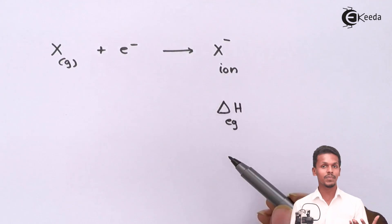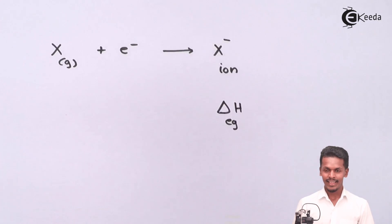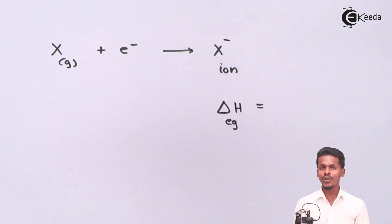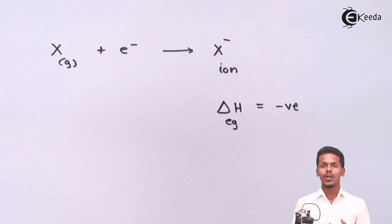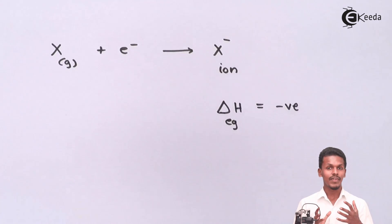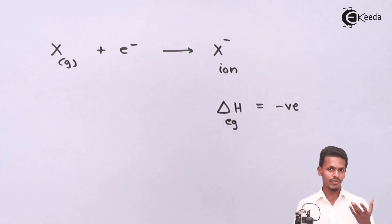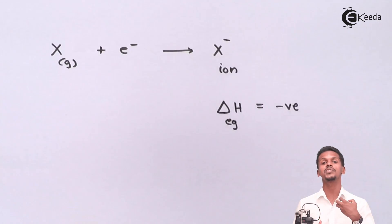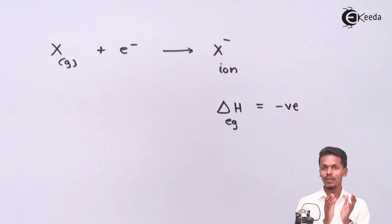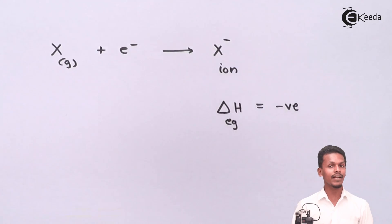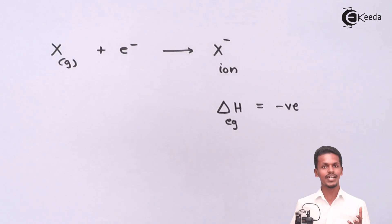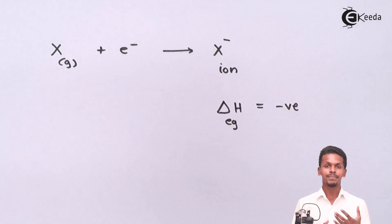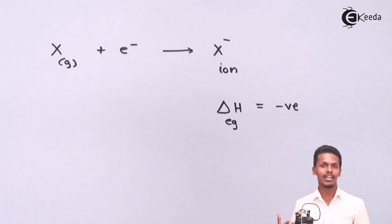Electron gain enthalpy is denoted by delta H with a subscript EG. It usually has a negative value because whenever an electron is added to a neutral atom or a negative species, energy is released from that system. Because energy is released, delta H_EG is usually negative.